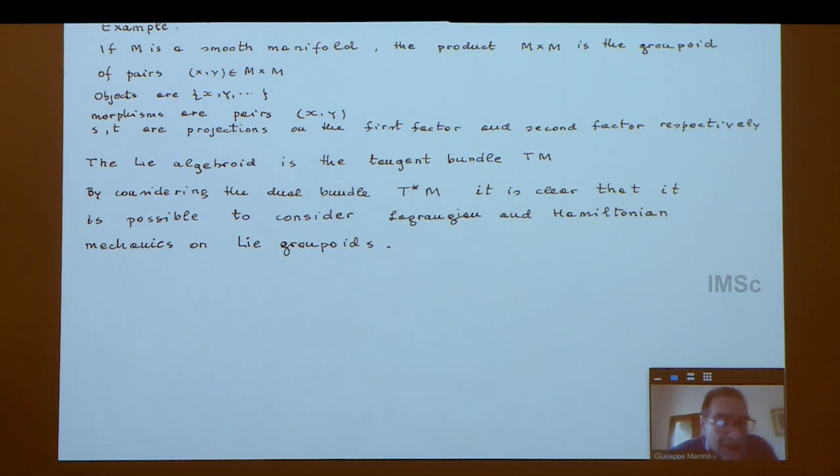If you consider the case of a pair groupoid—when you simply have two copies of the same manifold—this is a Lie groupoid, and the Lie algebroid is the tangent bundle. If you consider the dual bundle, you get phase space, and it's clear that classical physics can be formulated on Lie algebroids.